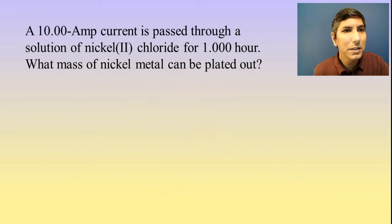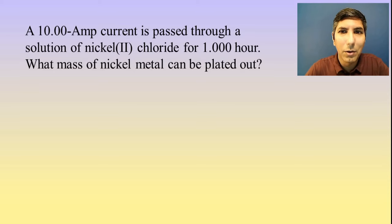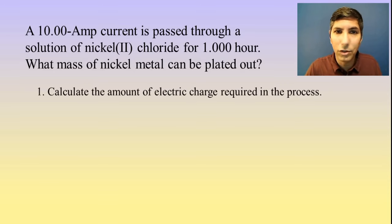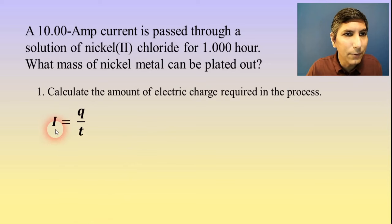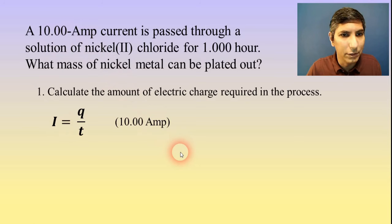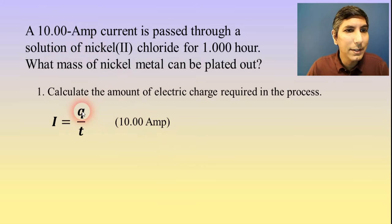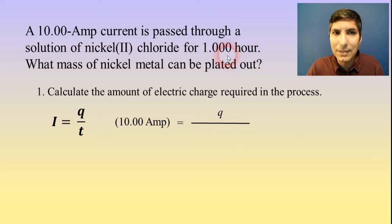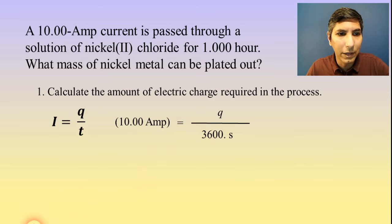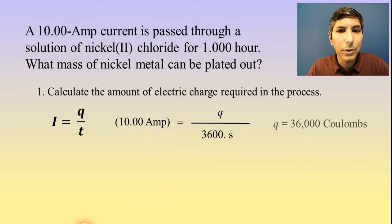The next example: a 10 amp current is passed through a solution of nickel(II) chloride for one hour. What mass of nickel metal can be plated out? First, we calculate the amount of electric charge using I = Q/T. The current is 10.00 amps. Time has to be in seconds — 60 seconds times 60 minutes is 3,600 seconds. Multiplying these together gives us an electric charge of 36,000 Coulombs.